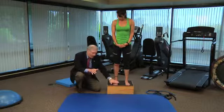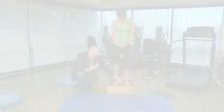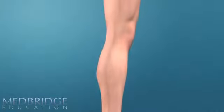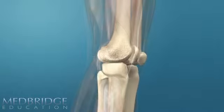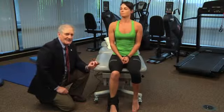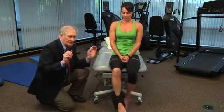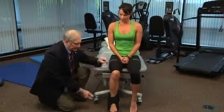Dr. Terry Malone received his EDD and MSPT from Duke University in North Carolina. At Duke, he served as the initial sports physical therapist and was the coordinator of the sports medicine clinic. Terry served as the initial chairman of the Sports Specialization Council of the APTA and has been the liaison to the American Orthopedic Society for Sports. He served as the physical therapy program director at the University of Kentucky from 1993 to 2006 and is now a full-time professor at the University of Kentucky.